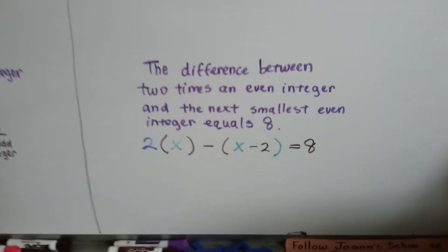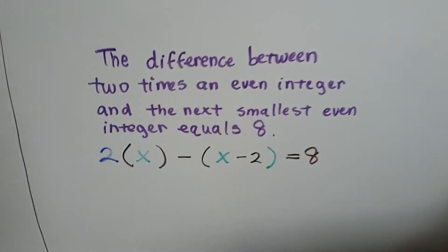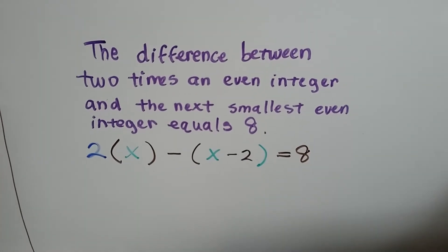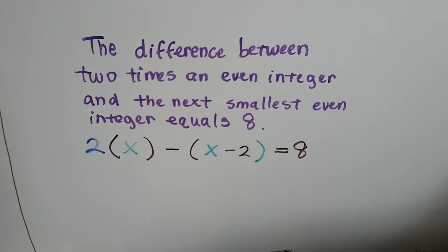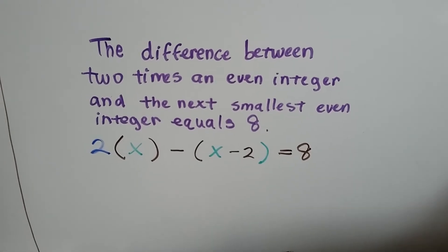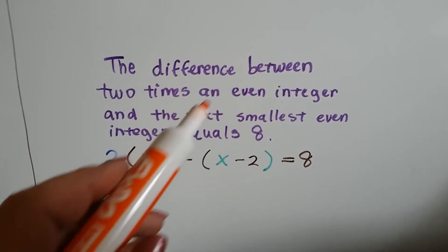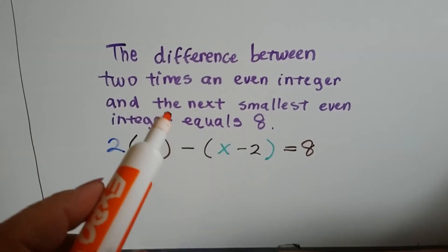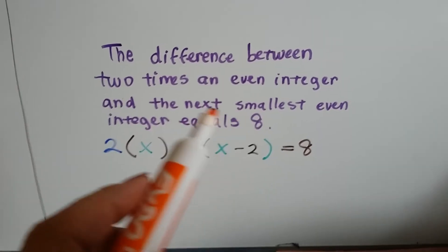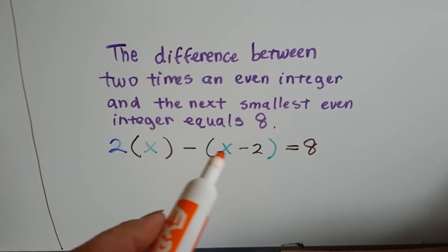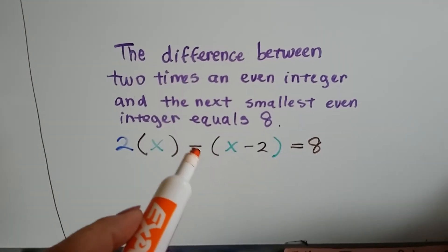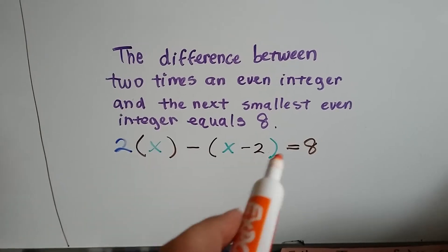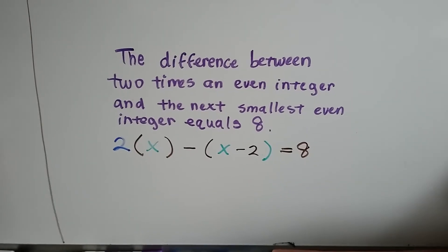What if it said the difference between two times an even integer and the next smallest even integer equals 8? Two times an even integer would be 2x, and the next smallest even integer would be x minus 2. The difference tells us it's subtraction, and it equals 8. So that would be our equation: 2x minus (x minus 2) equals 8.